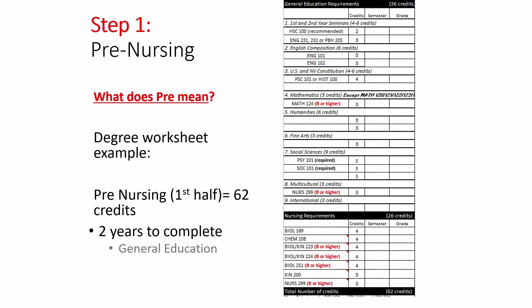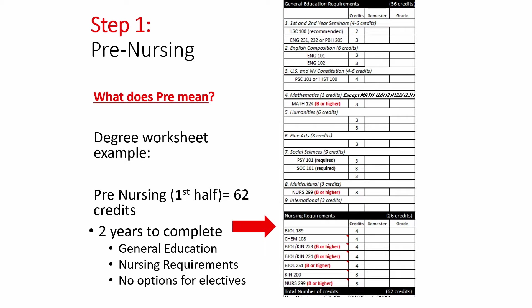All students must complete the nursing requirements, which include General Biology, Chemistry 108 — a combination of organic and inorganic chemistry — Anatomy and Physiology I and II, Microbiology, Statistics, and Nursing 299, which is a combination of nutrition and developmental psychology over the lifespan.